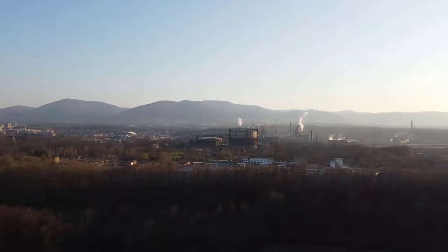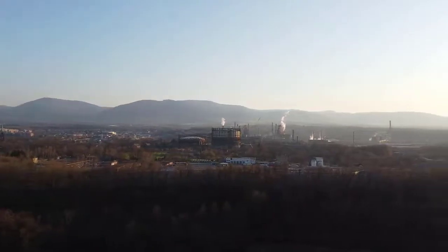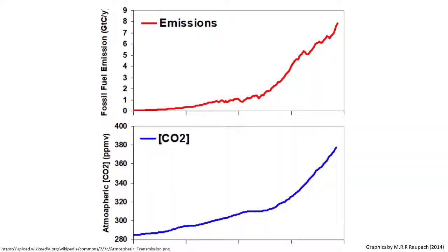At the start of the Industrial Revolution in the mid to late 1800s, the amount of fossil fuels being burnt increased significantly. And around about the 1890s, carbon dioxide concentrations were starting to increase in the atmosphere.